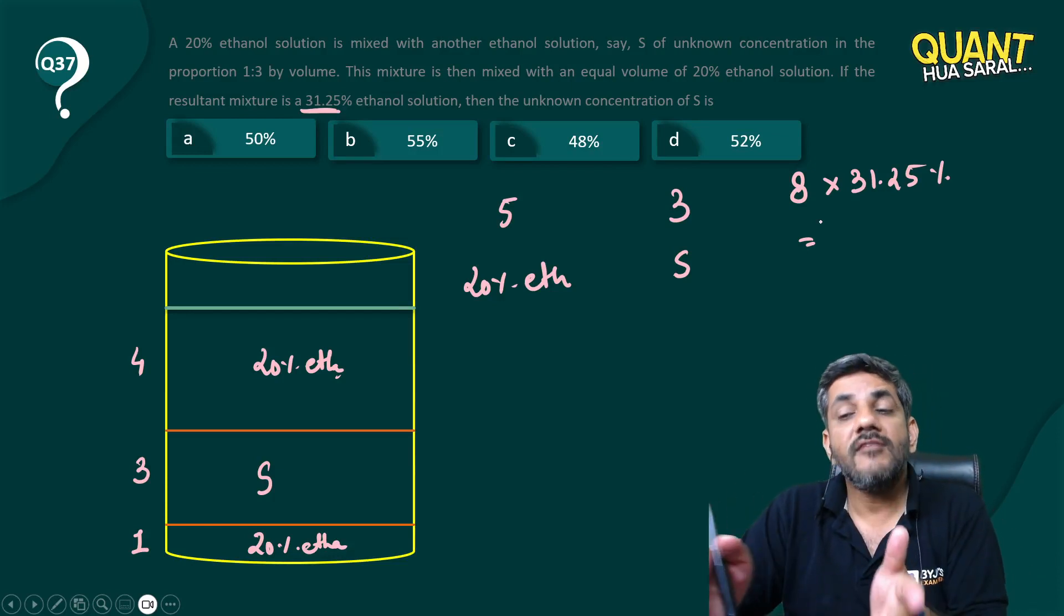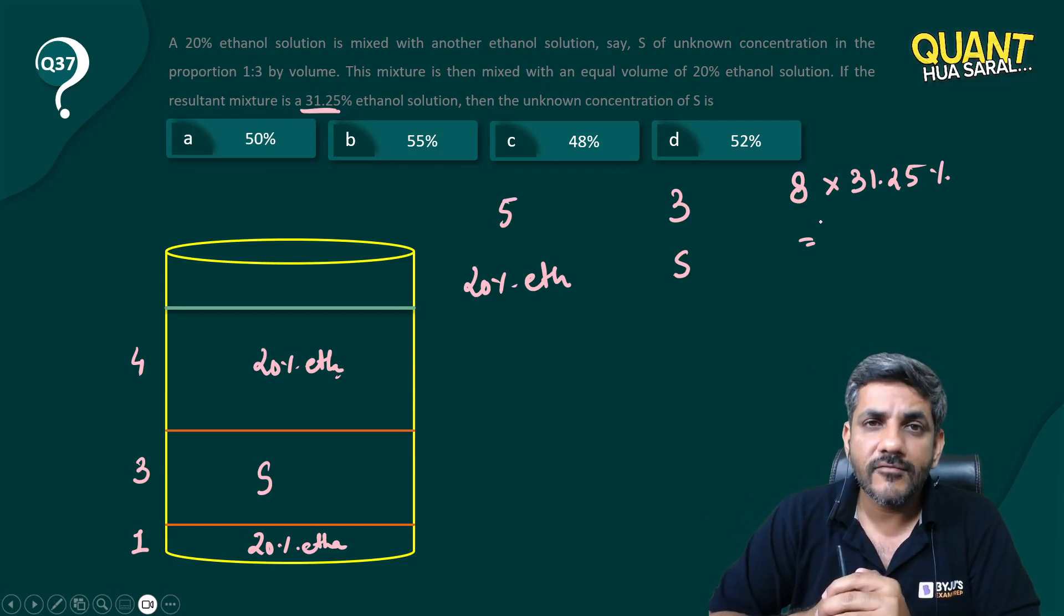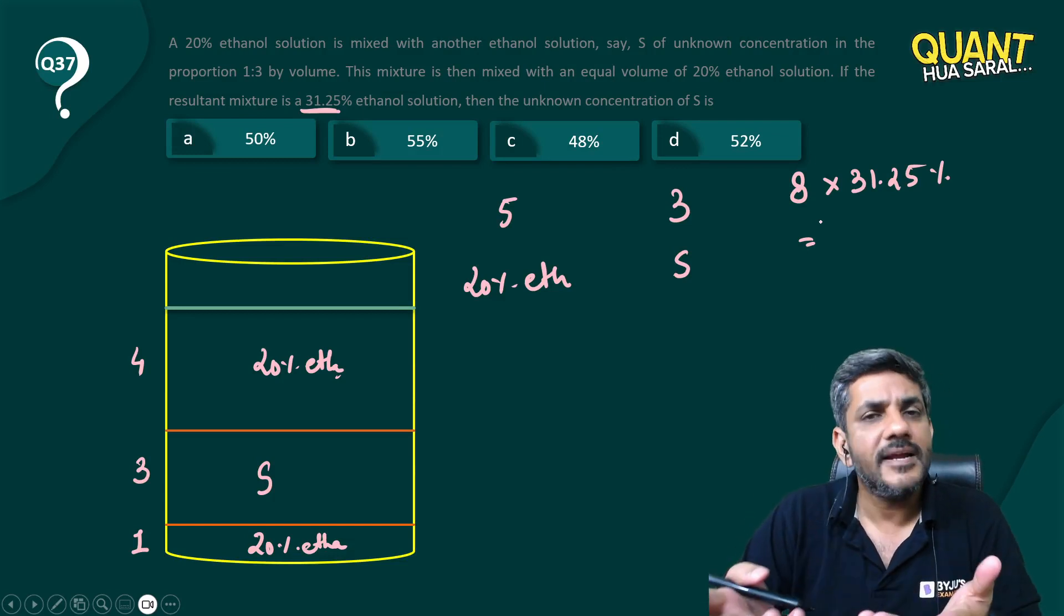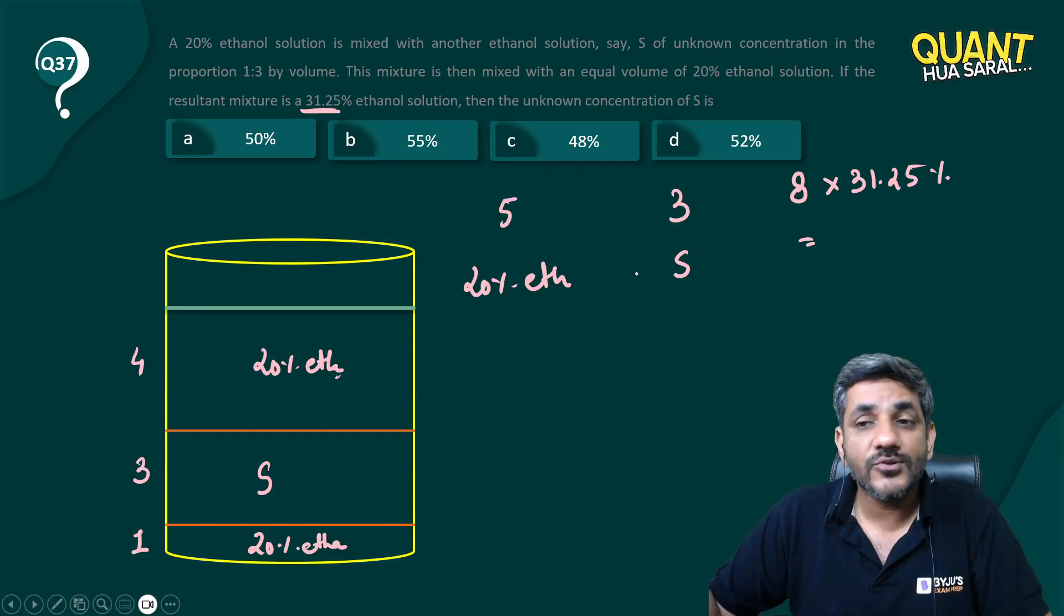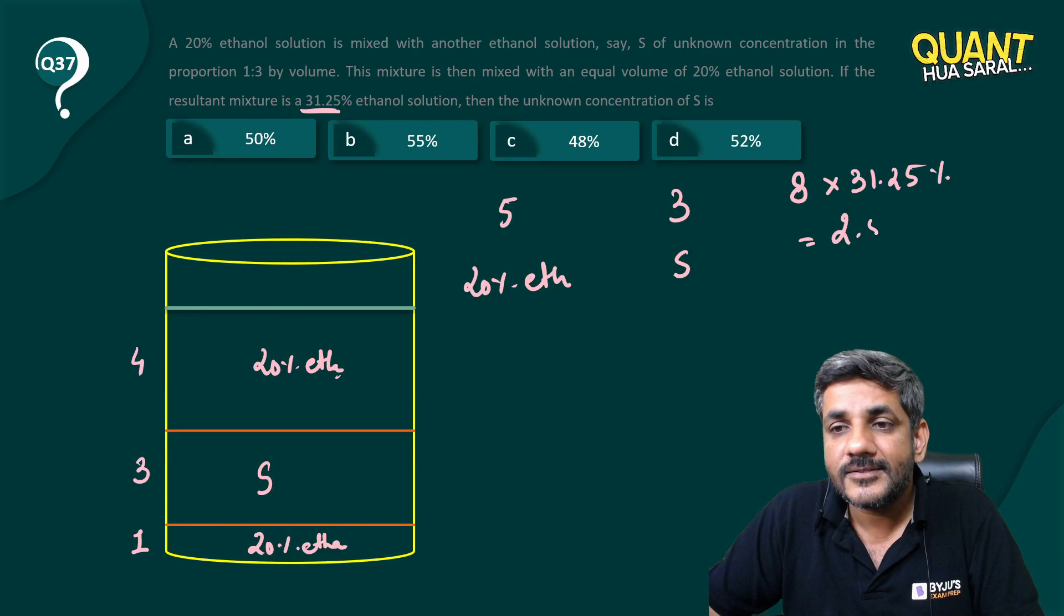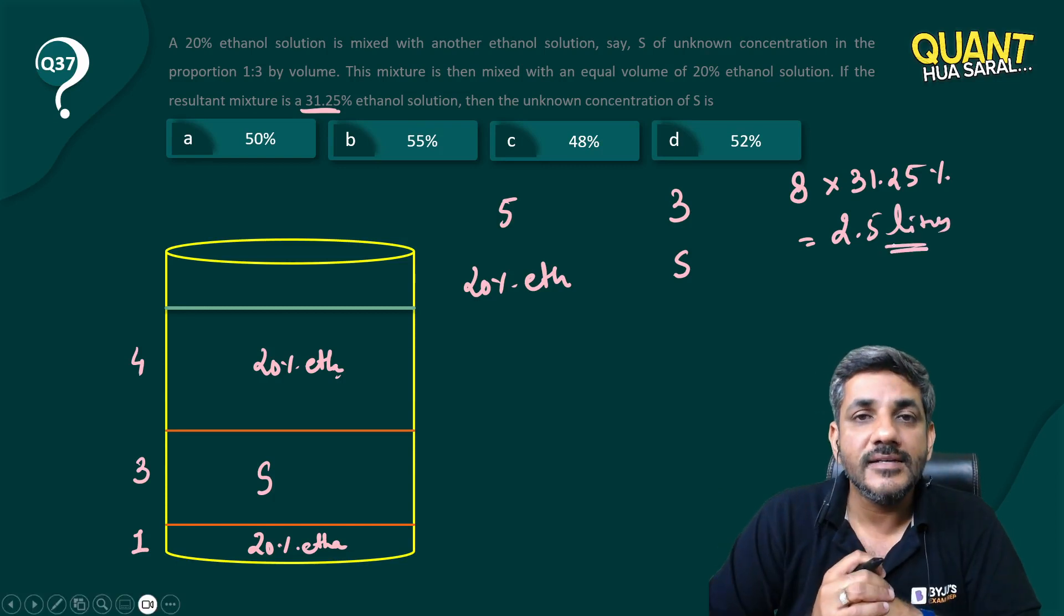240 and 10 is 250. So therefore the quantity is 2.5 liters. 8 times 31.25% is 2.5 liters. So the total 8 liters have 2.5 liters of ethanol.